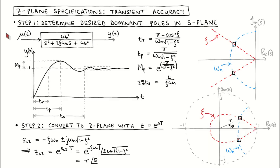The approach we take to specify the transient response of a system has two steps. We first specify the dominant poles in the S-plane and then convert the dominant poles to the Z-plane. Let's look at each of these steps in more detail.